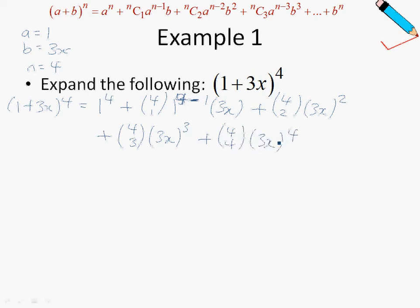It's important to know when to stop when you do your binomial expansion. You will stop when the bottom number becomes the same as the number above — so at 4 choose 4, we stop here.